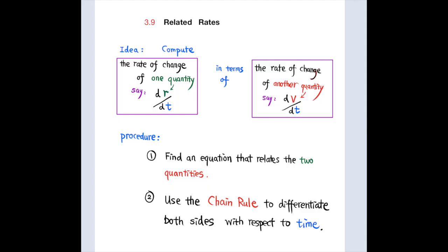Hi everyone! Today we're going to talk about 3.9 Related Rates. In a Related Rates problem, the idea is to compute the rate of change of one quantity in terms of the rate of change of another quantity. The procedure is to find an equation that relates the two quantities and then use the chain rule to differentiate both sides with respect to time.